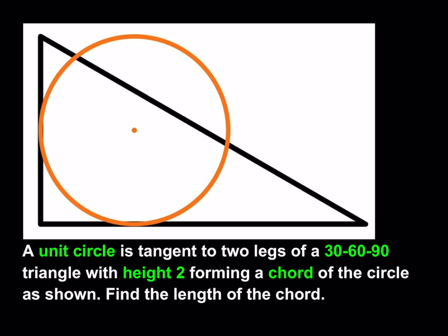We have a unit circle that is tangent to two of the legs — so it's not completely inscribed, it's just tangent to two of the sides from inside. This is a 30-60-90 triangle with height two, so the height of the triangle is two, and the circle is a unit circle which means its radius is one. The circle and the hypotenuse intersect, forming a chord, and we're supposed to find the length of that chord.